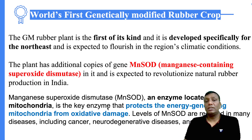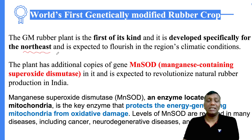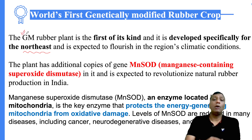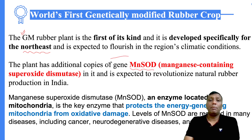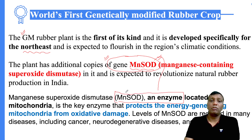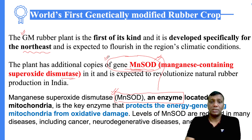The GM rubber plant is a first of its kind. The purpose of developing this plant is to enable it to grow in Northeast India, where the conditions are severe and normal rubber plant growth is not possible. The key gene involved is the MnSOD gene. MnSOD is a gene identified in the rubber plant; it is responsible for the formation of MnSOD enzyme — a type of protein responsible for metabolic activities inside a living organism.